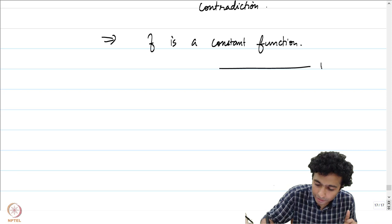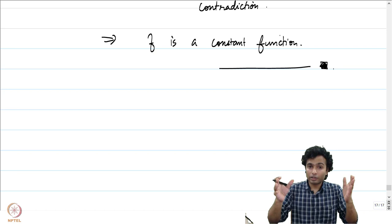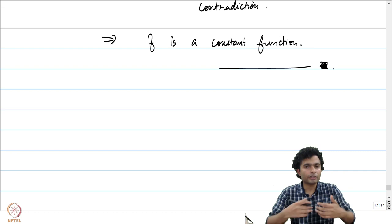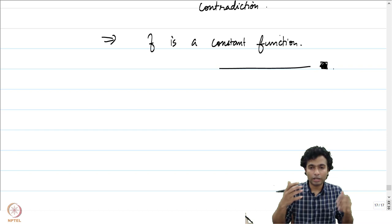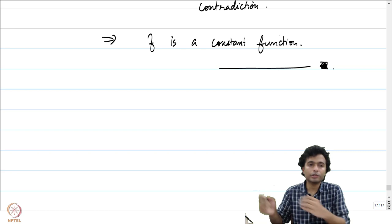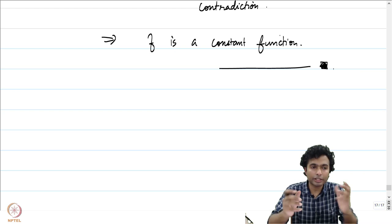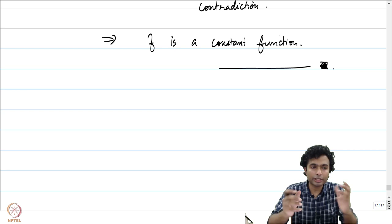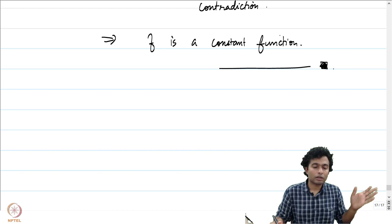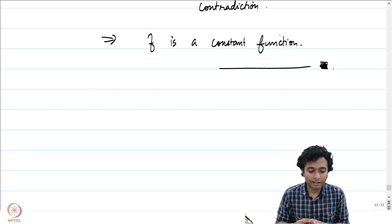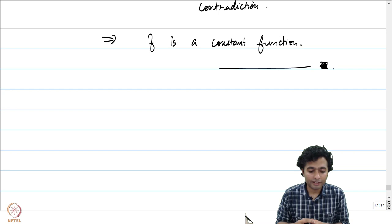That completes the proof of the Little Picard's theorem. With the conclusion of Picard's theorem, we have come to the conclusion of this course. There are multiple directions you could take further: one could study the Riemann mapping theorem, go into Riemann surfaces and the uniformization theorem, look deeper into harmonic functions and potential theory, study conformal and quasi-conformal mappings, or move into number theory with zeta functions and the prime number theorem. I hope you have benefited from this course — all the best in your future endeavors.